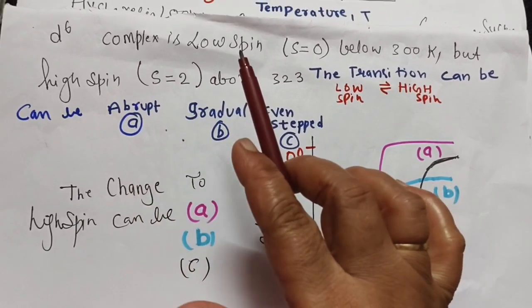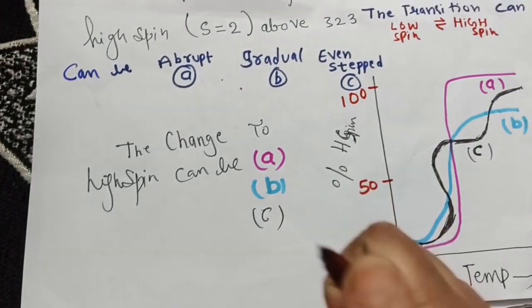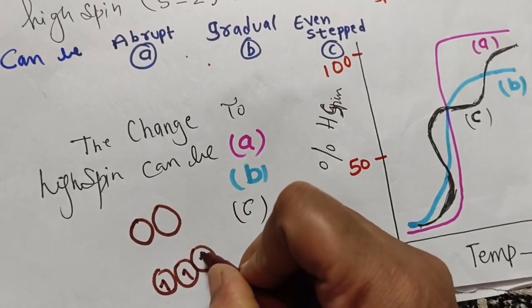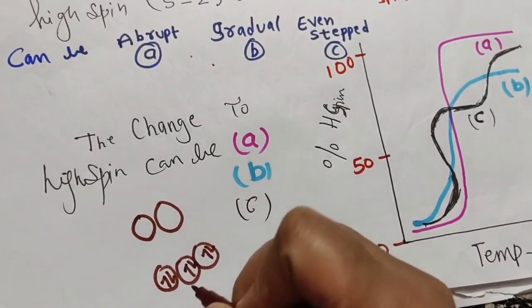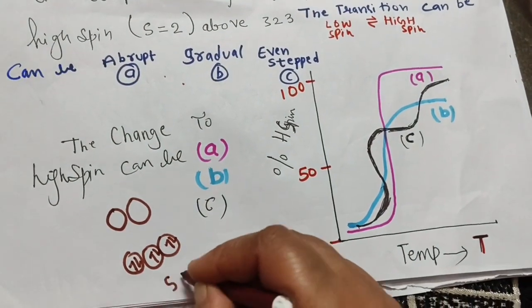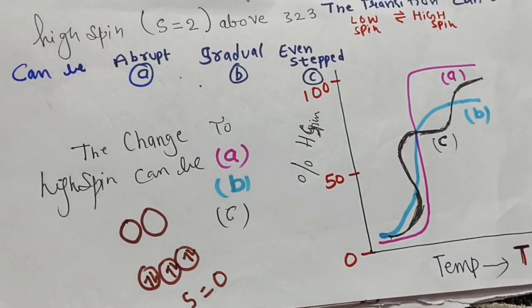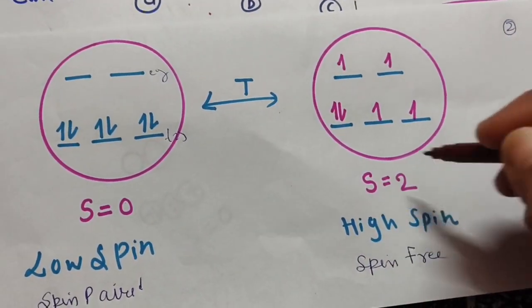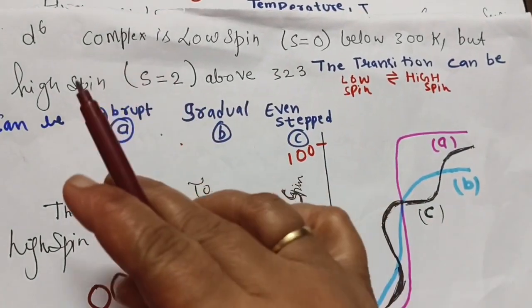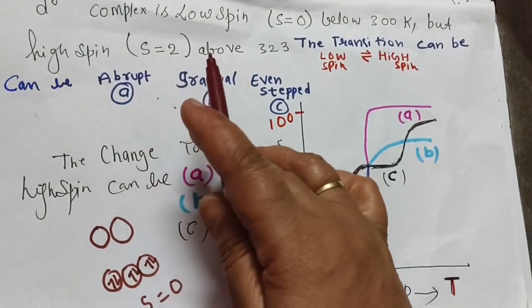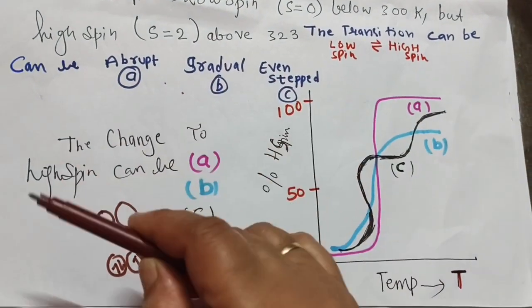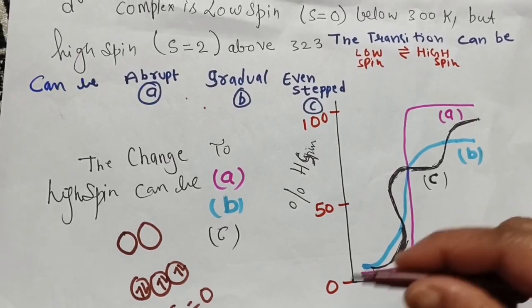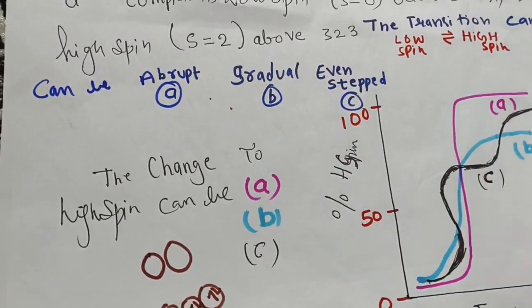For a d6 low spin complex, all six electrons are paired in t2g, so S equals zero. For a d6 high spin complex, S equals two (four unpaired electrons contribute). Above 323 K, spin transitions can take place. These transitions appear as abrupt, gradual, or stepped in different graphs.